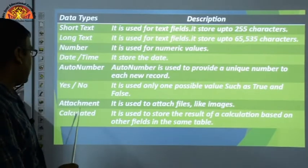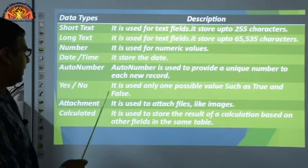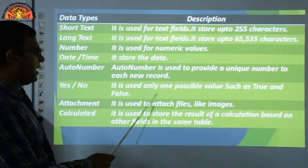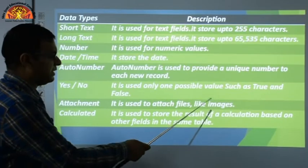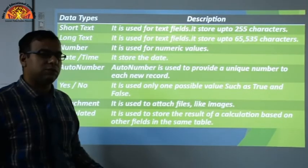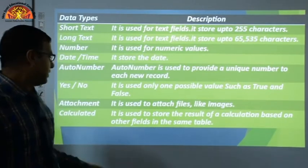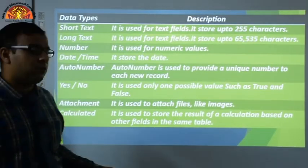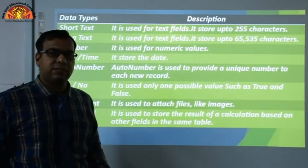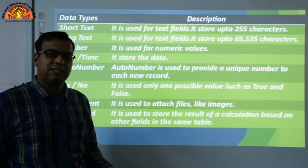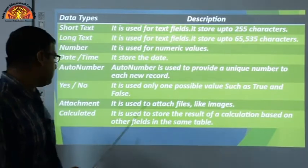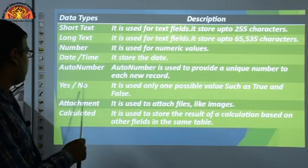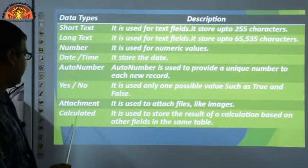Next is Attachment. It is used to attach files like images. If you want to attach or link a file to a record, you would use the Attachment data type.